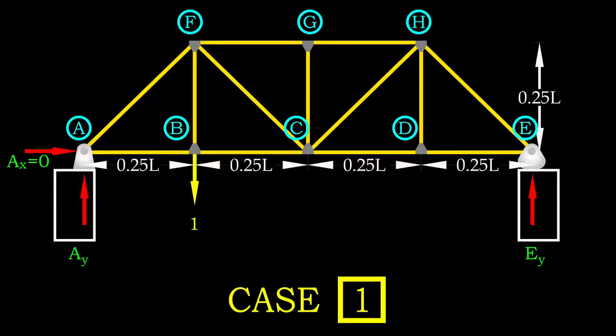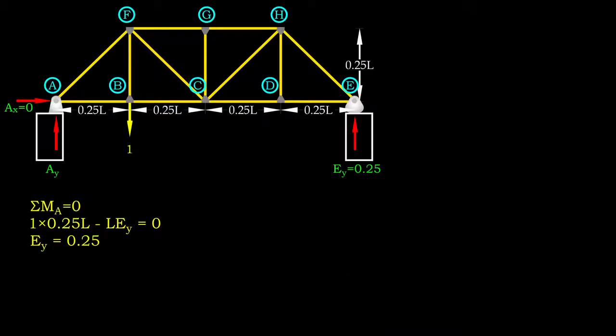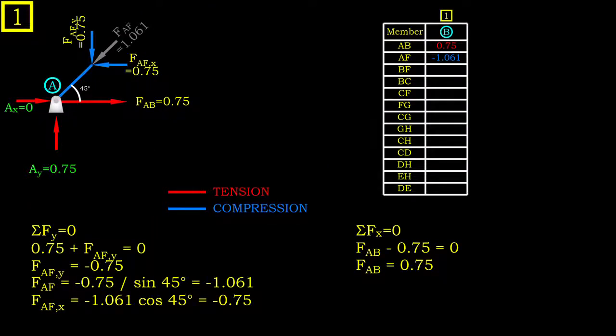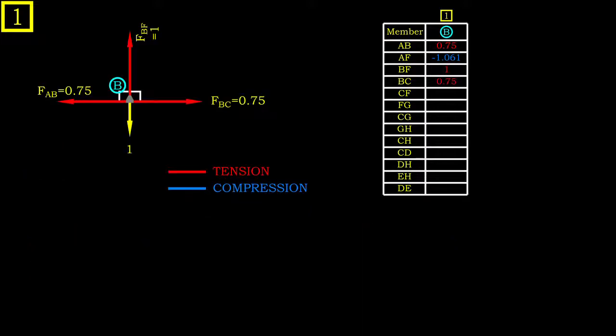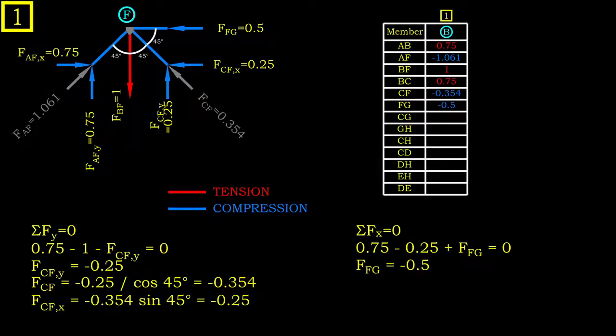For the first case, the unit load is located at node B. The support reactions at point A and E are 0.75 and 0.25 respectively. With the support reactions, we are now good to proceed with method of joints to determine the internal forces.